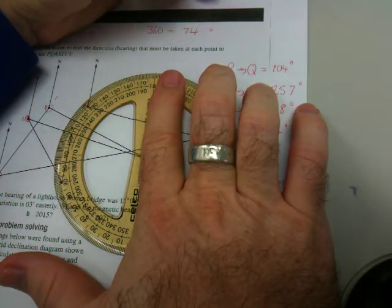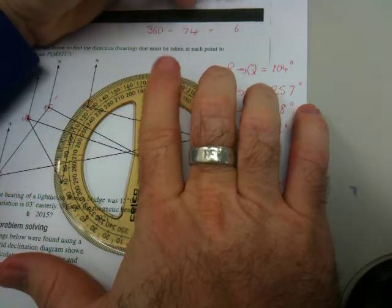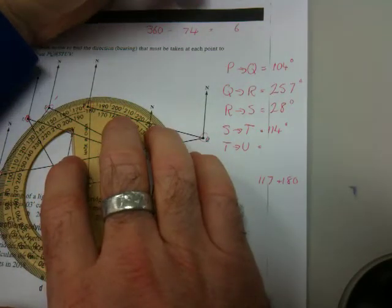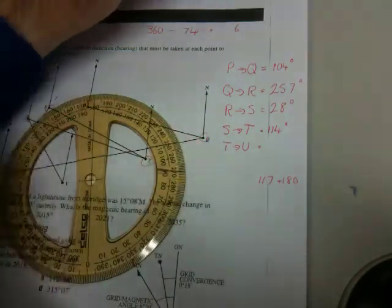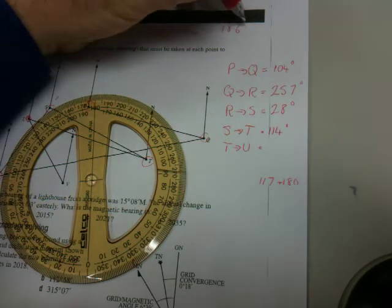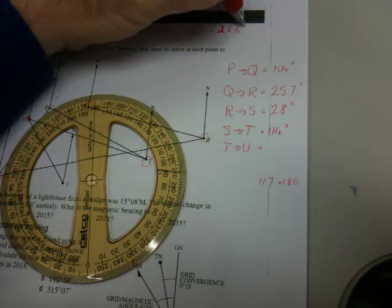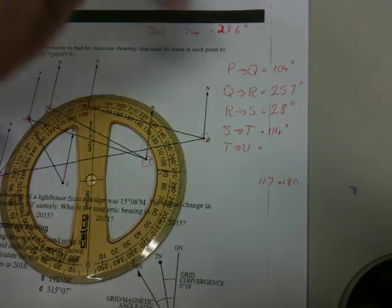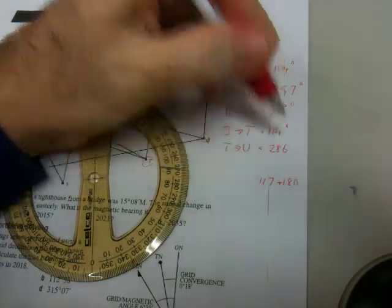And so that would be something like, a 6, what have we got, 186? Sorry, 286. 286 degrees. 286 degrees.